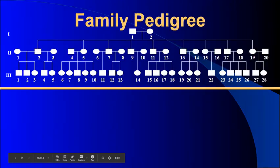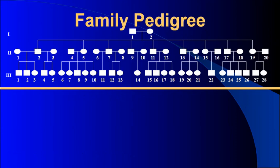This is an example of a family pedigree — it's actually my family pedigree. It has three generations, which are labeled off to the left with Roman numerals, and then each individual is given a number. In generation one we've got two people, in generation two we have 20 people, and in generation three we have 28 people.